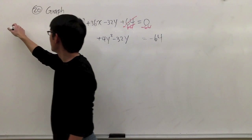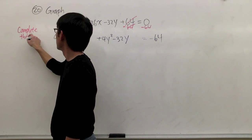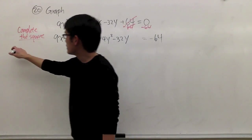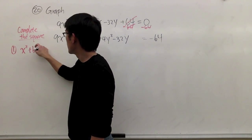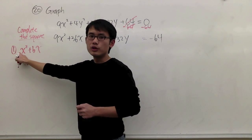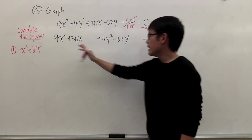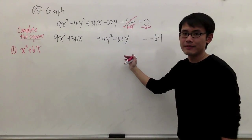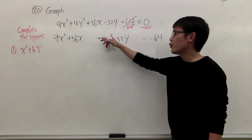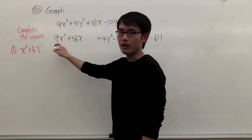Now, what do we need to complete the square? To complete the square, we need x squared plus bx — meaning we need the squared term to have a coefficient of 1. But here we have 9x squared, so that's not what we want. In this equation, we cannot just divide everything by 9, because if we do, when we want to complete the square for the y, we will get 4 over 9 — and we cannot do much with that.